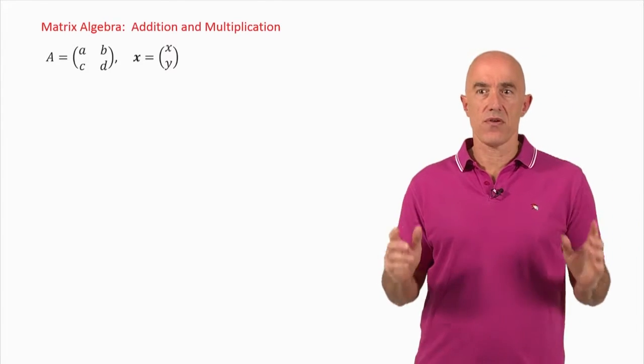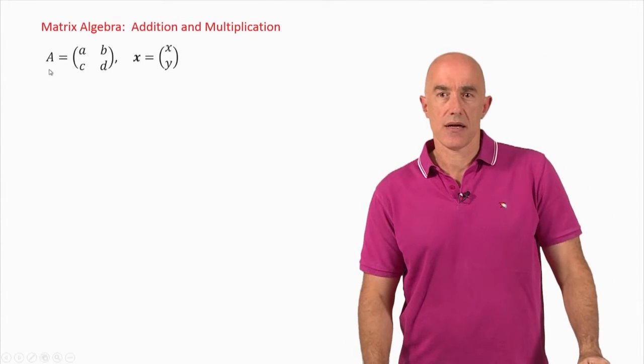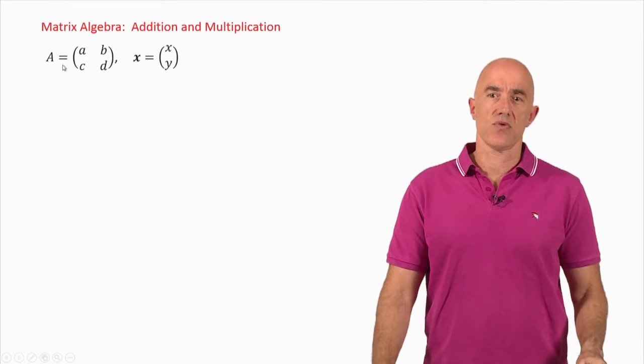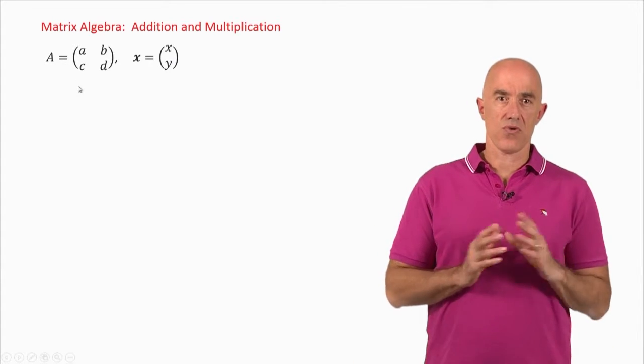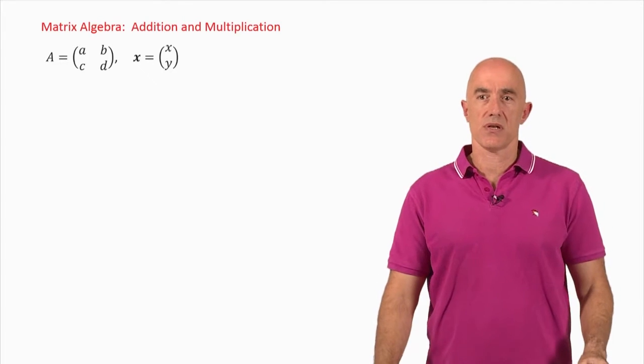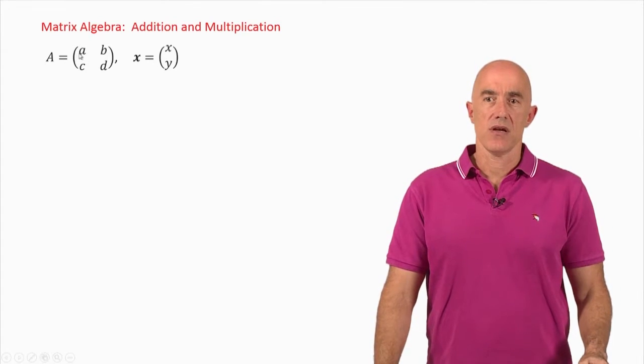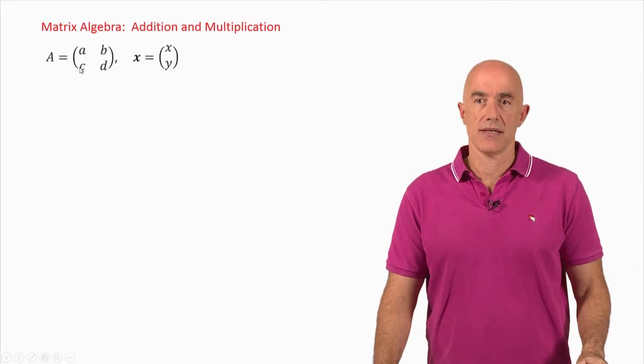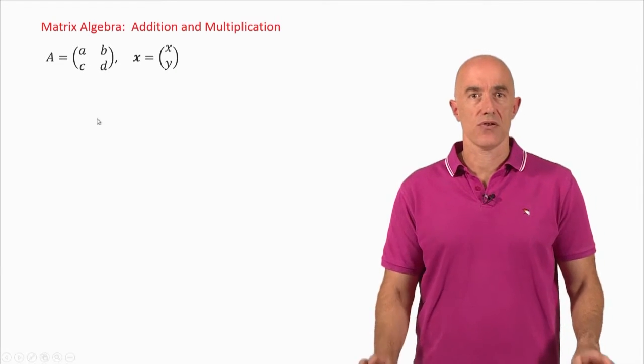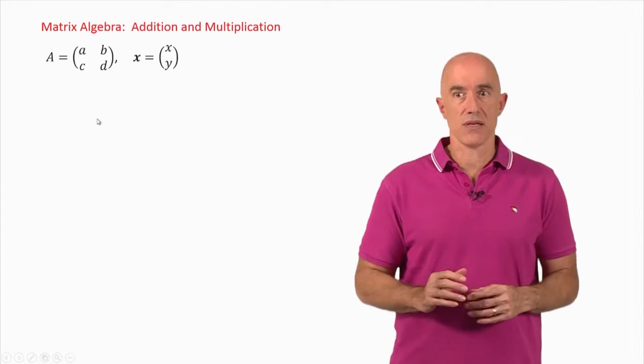So we start with the very basics. Capital A here is what's called a matrix, and it is a 2 by 2 matrix. That means it has two rows: A, B, C, D, and two columns: A, C and B, D. So we say it's a 2 by 2 matrix.